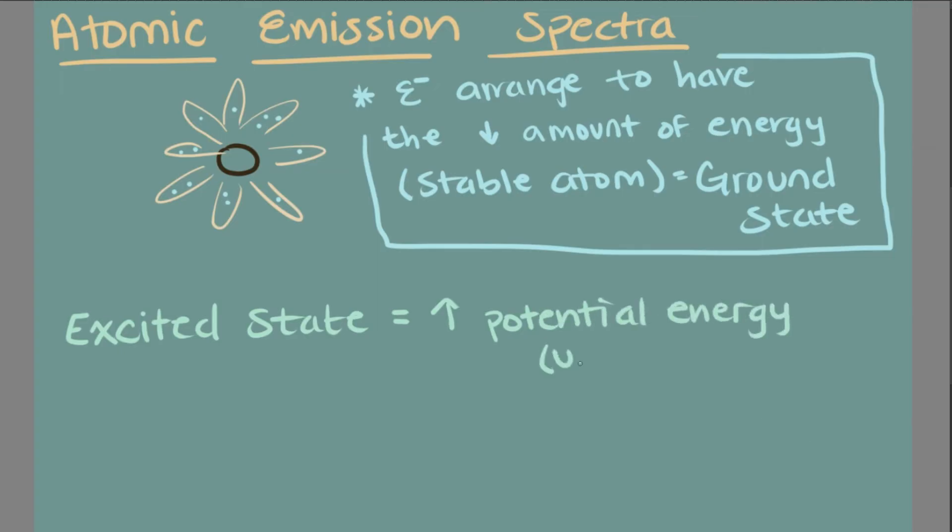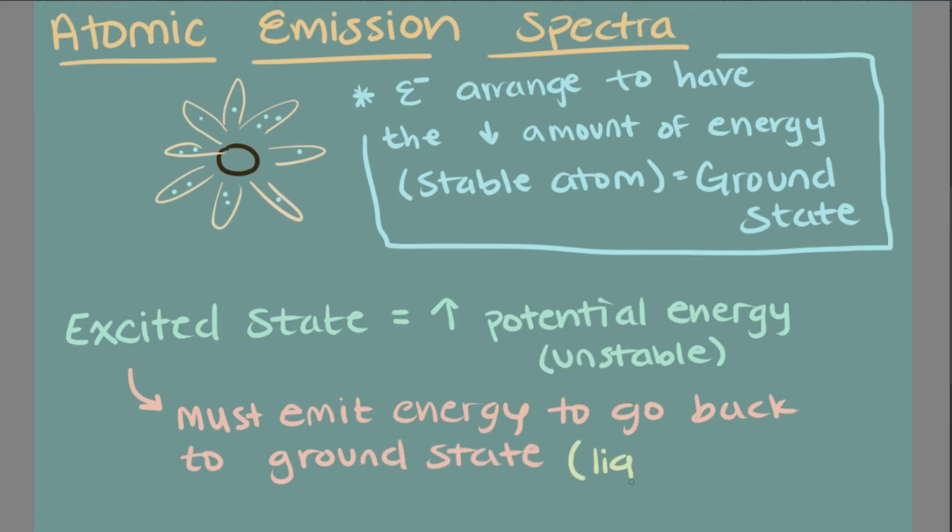Upon returning to the ground state, the atom emits the previously absorbed energy as electromagnetic radiation. This means we can see different colors of light on the visible light spectrum or have higher waves of energy being released like gamma rays.